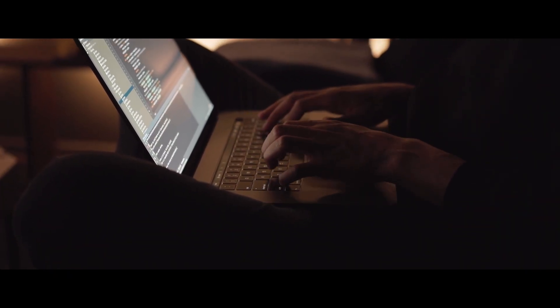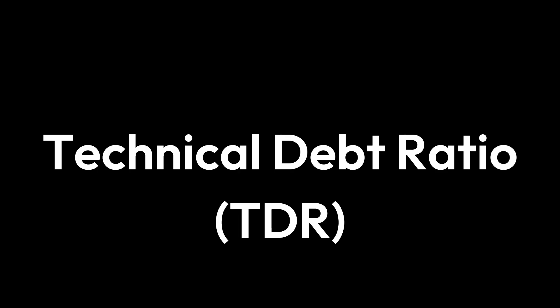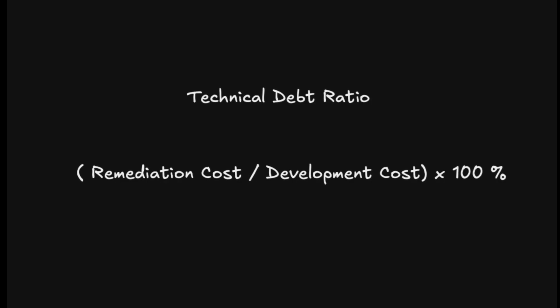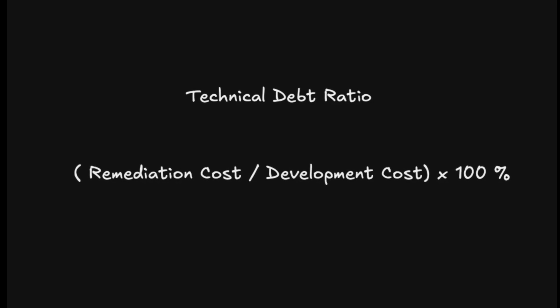One useful tool is the Technical Debt Ratio, or TDR. This metric compares the cost of fixing existing issues to the cost of building new features. The formula is simple: TDR equals remediation cost over development cost. If your TDR is below 5% you're in good shape; around 10% you're in warning territory; and once you're above 20%, your team is basically standing still, spending more time cleaning up than moving forward.